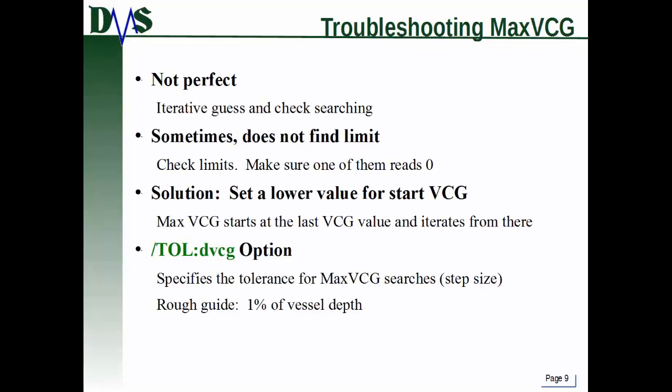Let's talk about how to troubleshoot the max VCG command. It's not a perfect command — of all the amazing features in GHS, max VCG probably gets the most criticism. It works by iterative guessing and checking, and it's not the most efficient optimizing program. Sometimes it can't find limits, so you have to check your output carefully and be suspicious of the results to make sure it's working correctly.